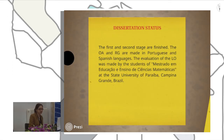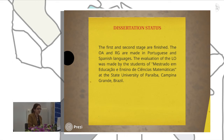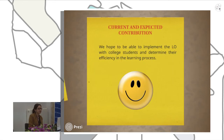The first and second stages are now finished. The learning objects and geometric representations are made in both Portuguese and Spanish. The evaluation was conducted by students of the Maestrado en Educación de Ensino de Ciencias Matemáticas at the State University of Paraíba, Campina Grande, Brazil. We hope to implement the learning objects with college students and determine their efficiency in the learning process.